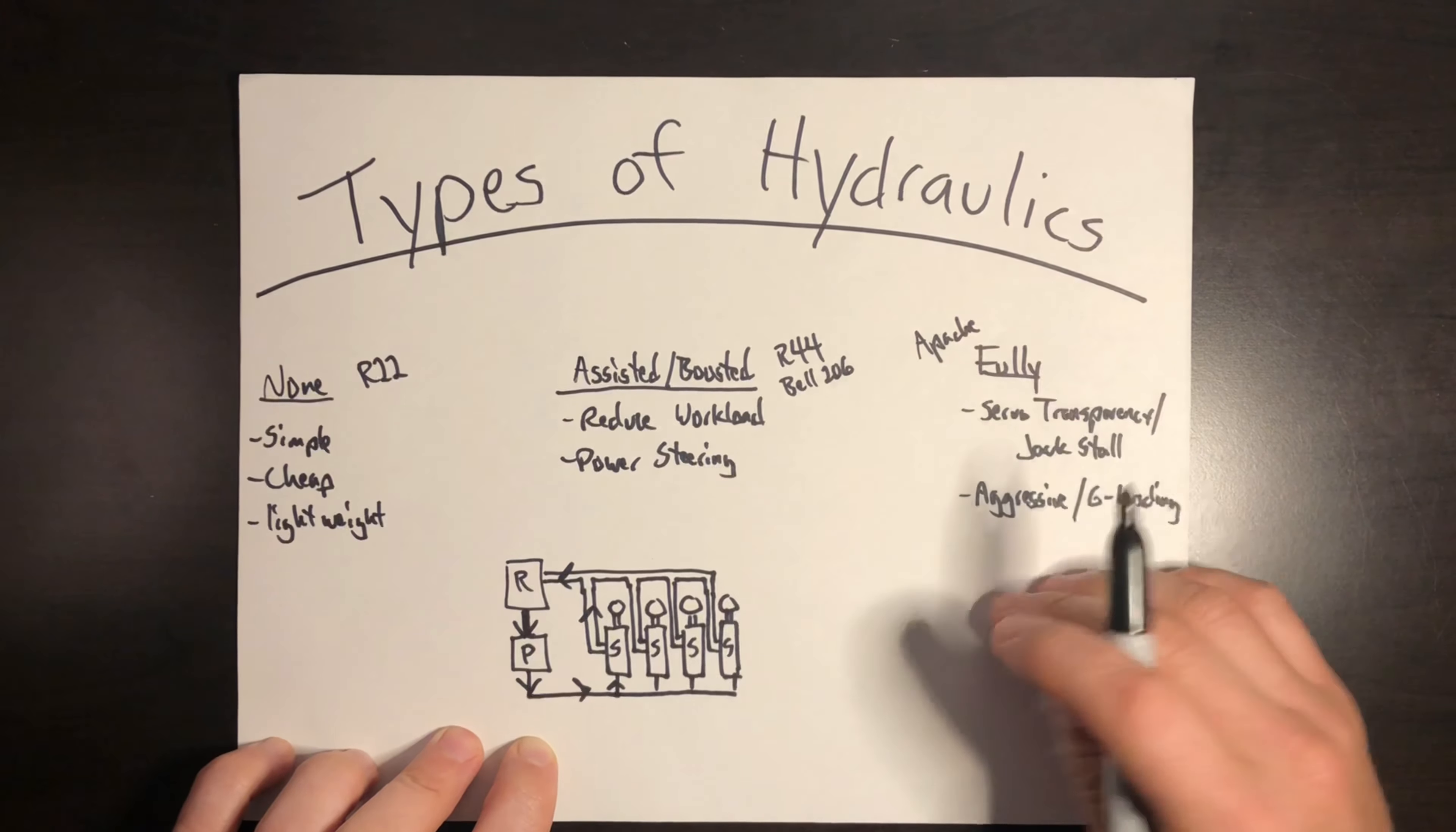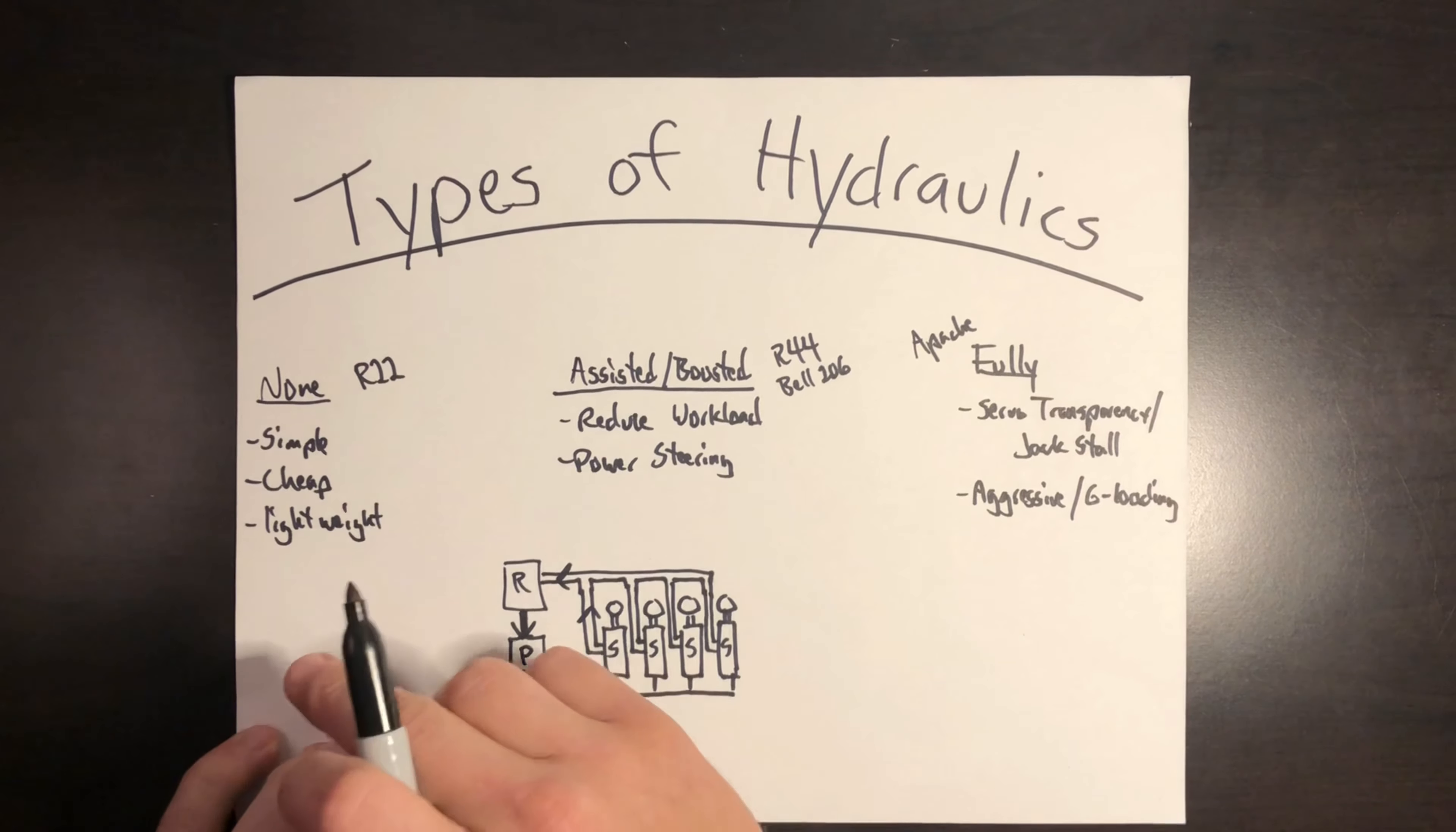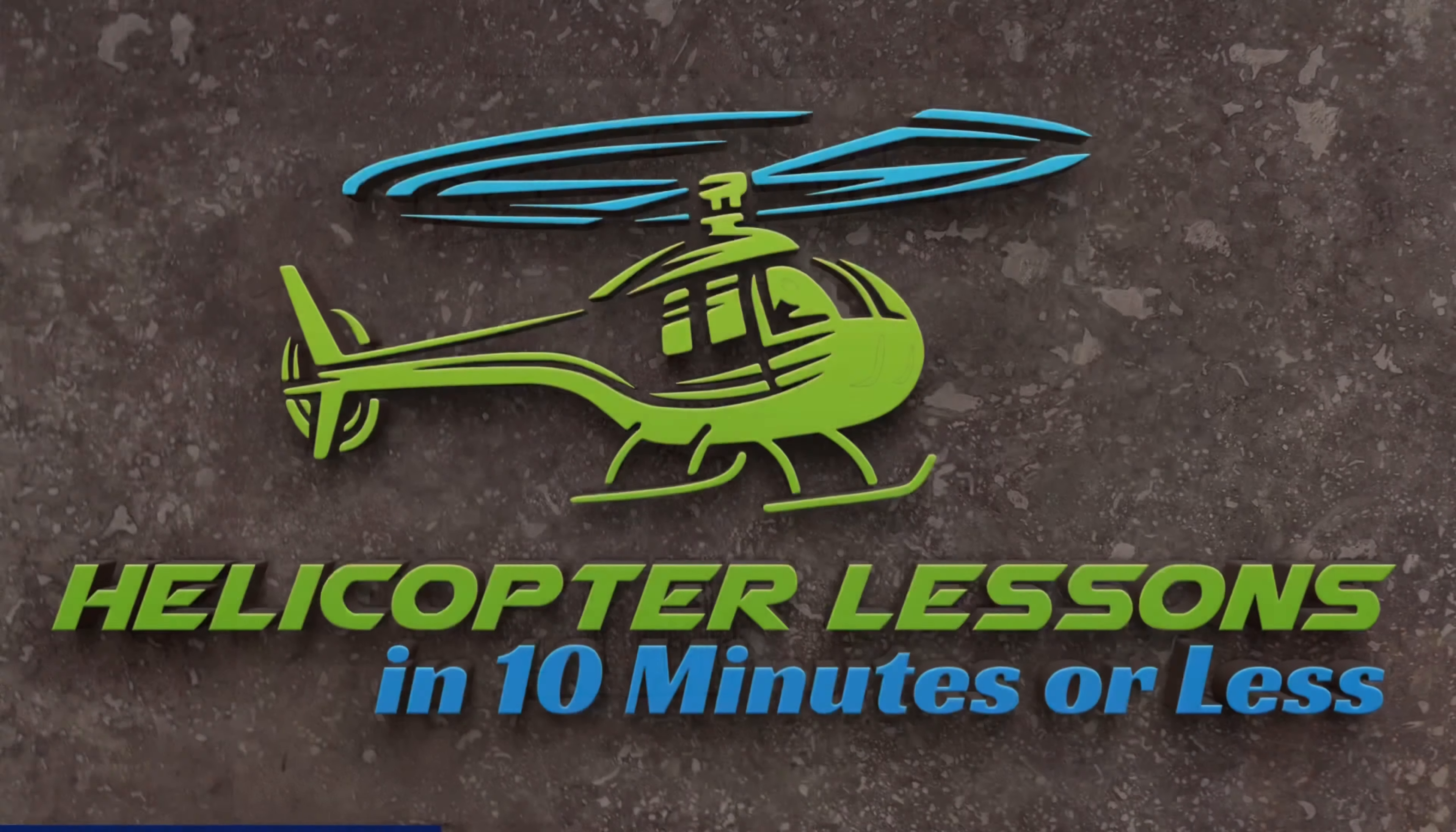The only downside to this system is unlike the boosted system, if the hydraulics are off or they're completely failed, you have no authority in the flight controls. You can't move anything. So because of this, these fully hydraulic systems have to have redundant systems. So you're going to have multiple reservoirs, multiple pumps, multiple lines, so that in the event that one part fails, the backup system can still maneuver the helicopter or maneuver the flight controls. Whereas the assisted, you can still move it. It's just going to be a lot more force to move flight controls. So it has to have the redundant system in this one.